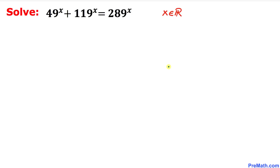Welcome to Pre-Math. In this video tutorial we are going to solve this given exponential equation: 49^x plus 119^x equals 289^x, where x is a real number. Let's go ahead and get started with the solution.